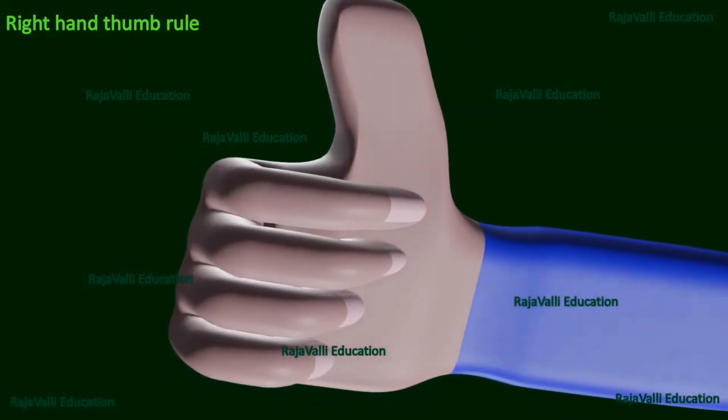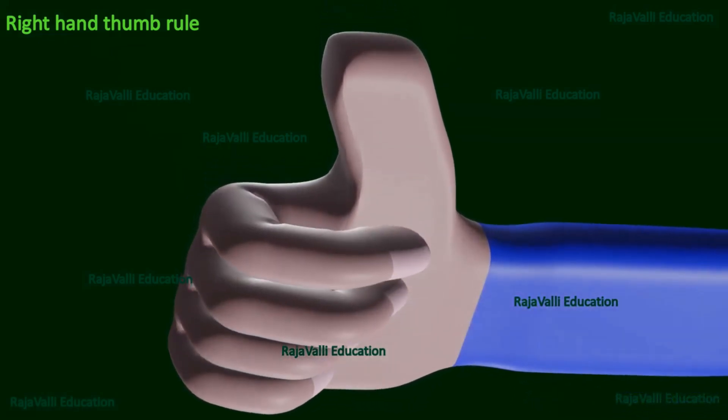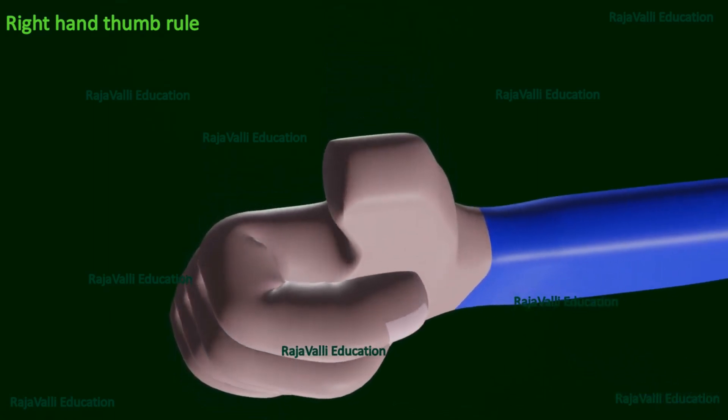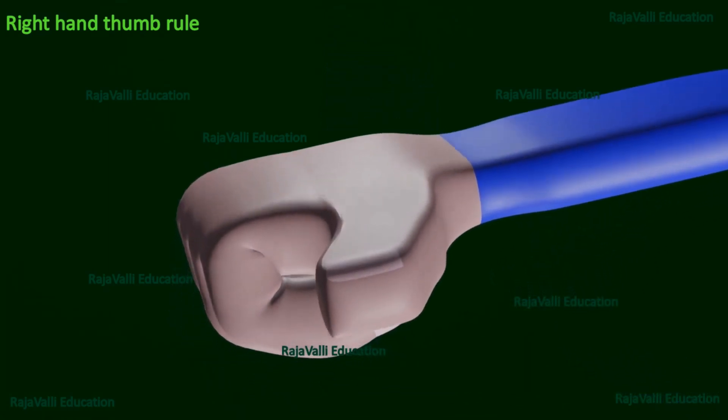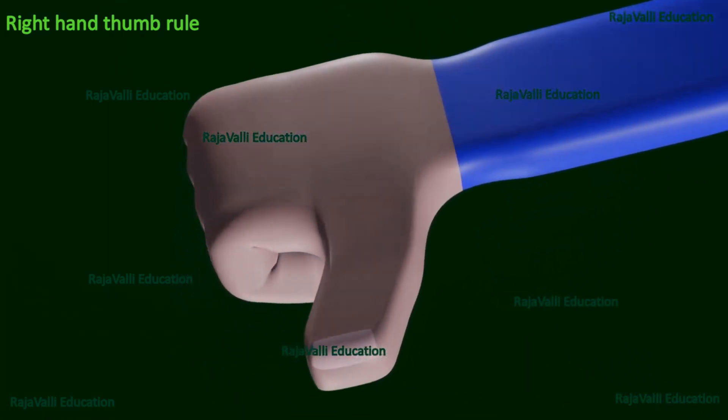Here, the direction of the right hand is changing. So, after changing the direction of the right hand, the thumb is in downward direction.